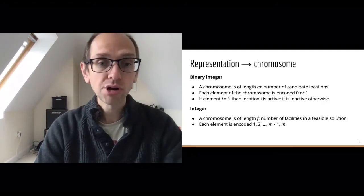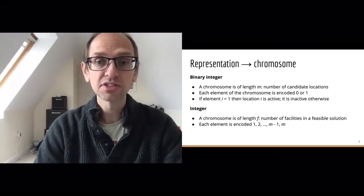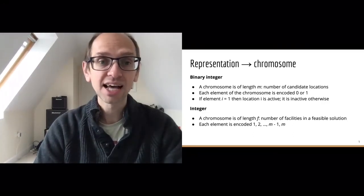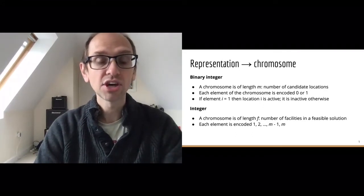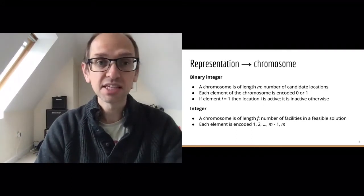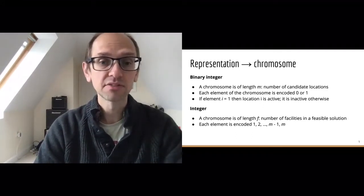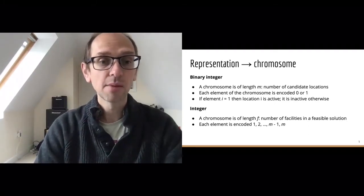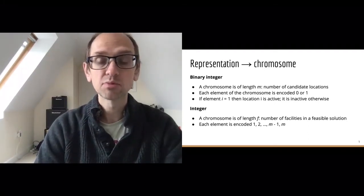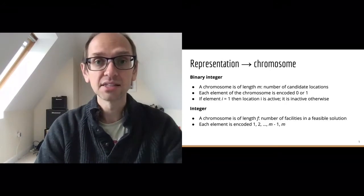In integer format, the array or chromosome has length F — the number of facilities we wish to allocate. Each element is encoded with the index representing that particular facility, so each element is a number between one and M.